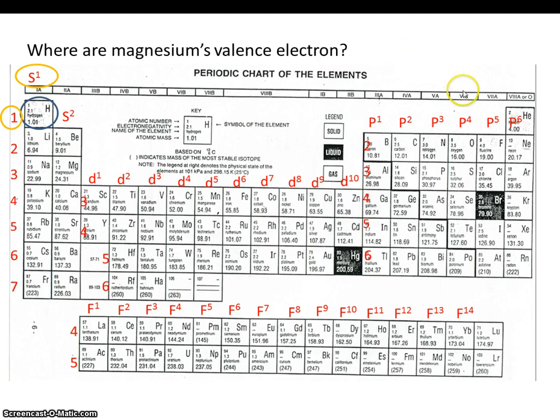Let's try another one. Where are magnesium's valence electrons? Well, magnesium is number 12. Magnesium has 12 protons and 12 electrons. But where are magnesium's valence electrons?